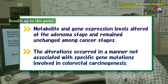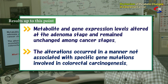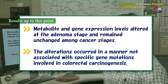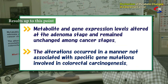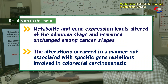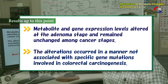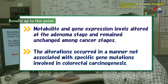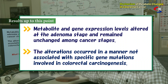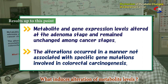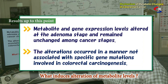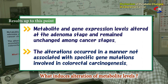As a result, we learned that gene expression of elements such as metabolites and metabolism-related genes occurs at the adenoma stage. Changes in these elements do not depend on the stage, and metabolism does not change when gene mutations observed in colorectal cancer take place. So what causes changes in metabolism? The question remained.